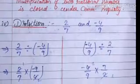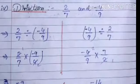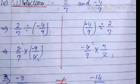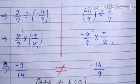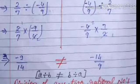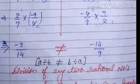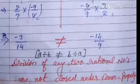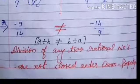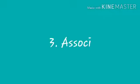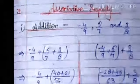Next we will check commutative property for division. Taking two rational numbers two upon seven and minus four upon nine, we divide two upon seven by minus four upon nine on one side, and minus four upon nine by two upon seven on the other. We get minus nine upon fourteen on one side and minus fourteen upon nine on the other, which are not equal. So division of any two rational numbers is not closed under commutative property.